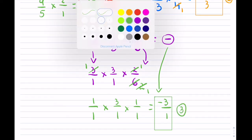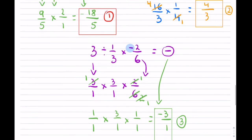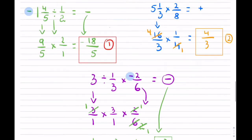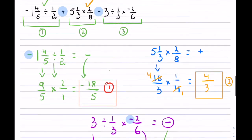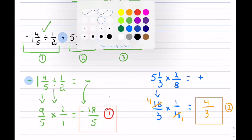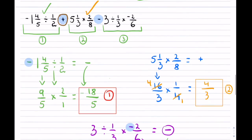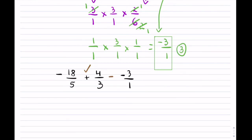Let's collect these three terms together. We have term number 1, which is minus 18 over 5; term number 2, which is 4 over 3; and term number 3, which is negative 3 over 1. Going back to the original expression, there's an addition between terms 1 and 2 — that won't change. But in front of the third term there is a subtraction, and a negative and a negative is positive. So this becomes 18 over 5 plus 4 over 3 plus 3 over 1.